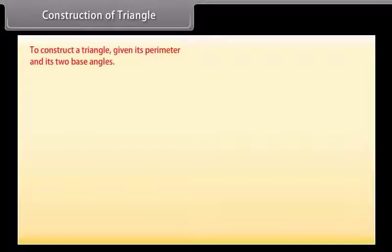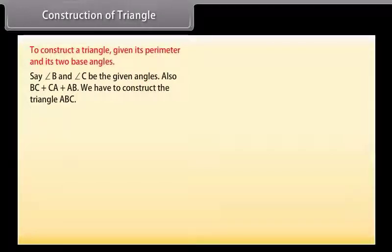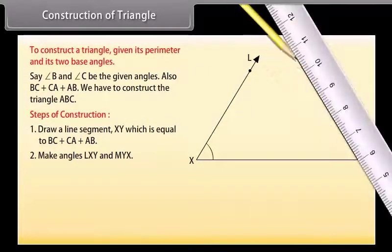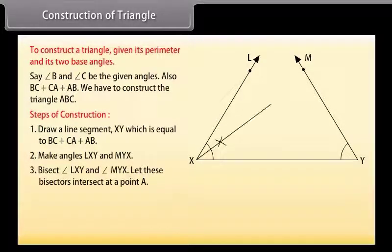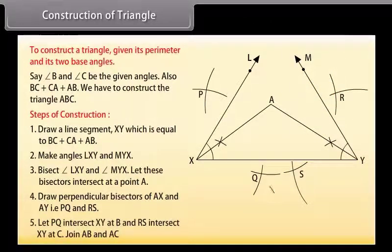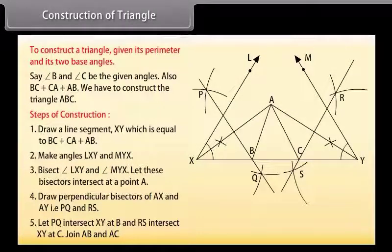Let us now construct a triangle given its perimeter and its two base angles, say angle B and angle C, where BC plus CA plus AB is given. Draw a line segment XY equal to BC plus CA plus AB. Make angles LXY and MYX equal to the given base angles. Bisect angles LXY and MYX; let these bisectors intersect at point A. Draw perpendicular bisectors PQ of AX and RS of AY. Let PQ intersect XY at B and RS intersect XY at C. Join AB and AC. Then ABC is the required triangle.